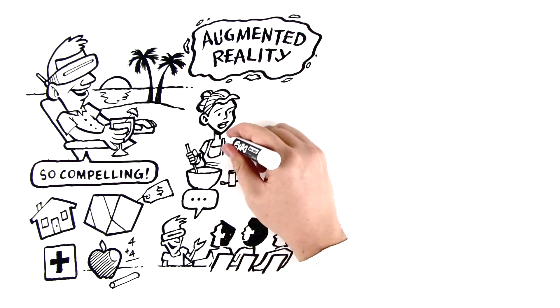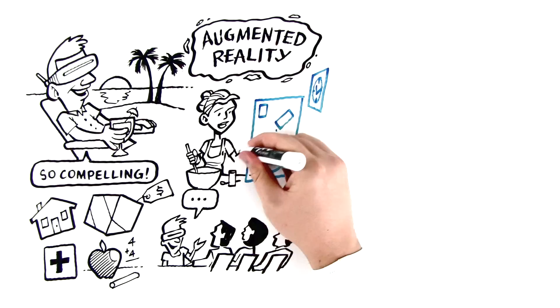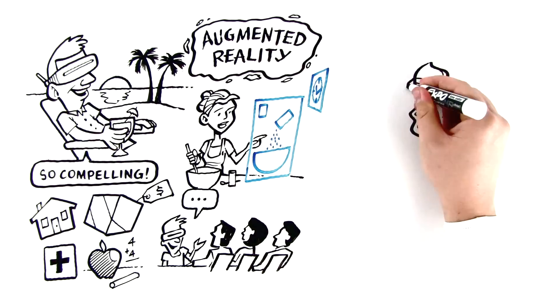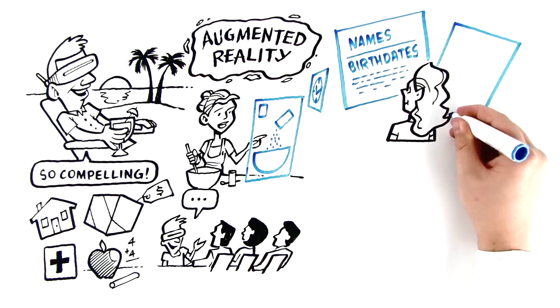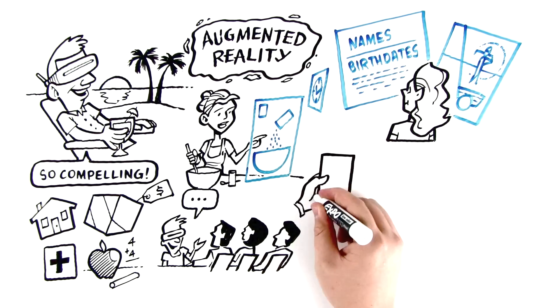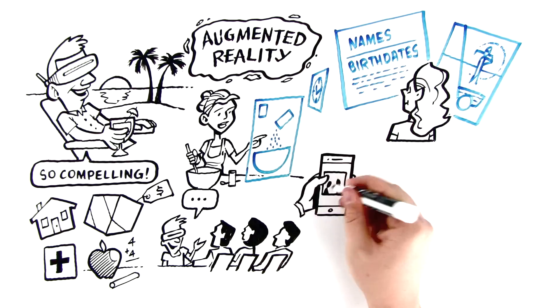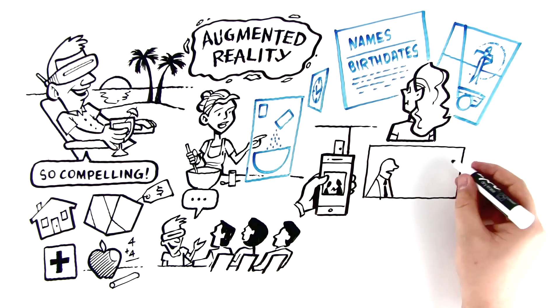By projecting a digital layer of information on top of our personal reality, AR gives us the ability to digitally enhance what we see, reminding you of names and birthdates when needed, or offering how-to instructions when trying to learn a new skill. AR will also offer the ability to project a video screen onto any flat surface, potentially rendering all future screens obsolete.